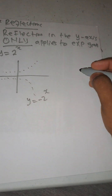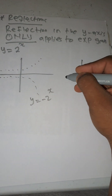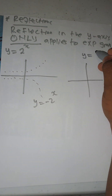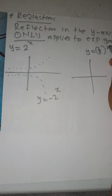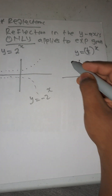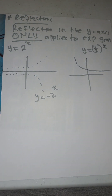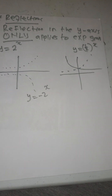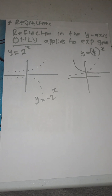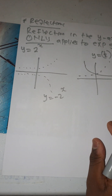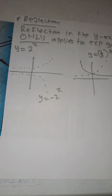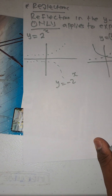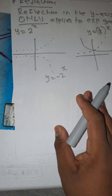Similarly, if I have y = (1/2)^x, which is a decreasing function, and I reflect it in the y-axis, it becomes an increasing curve. So you have to be careful with reflections.